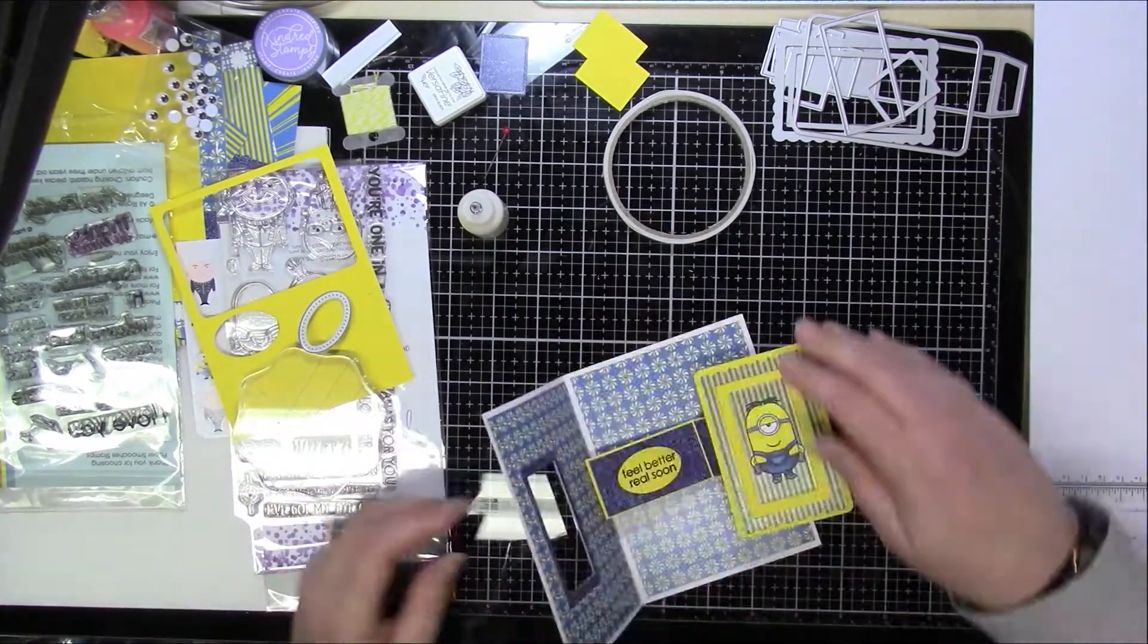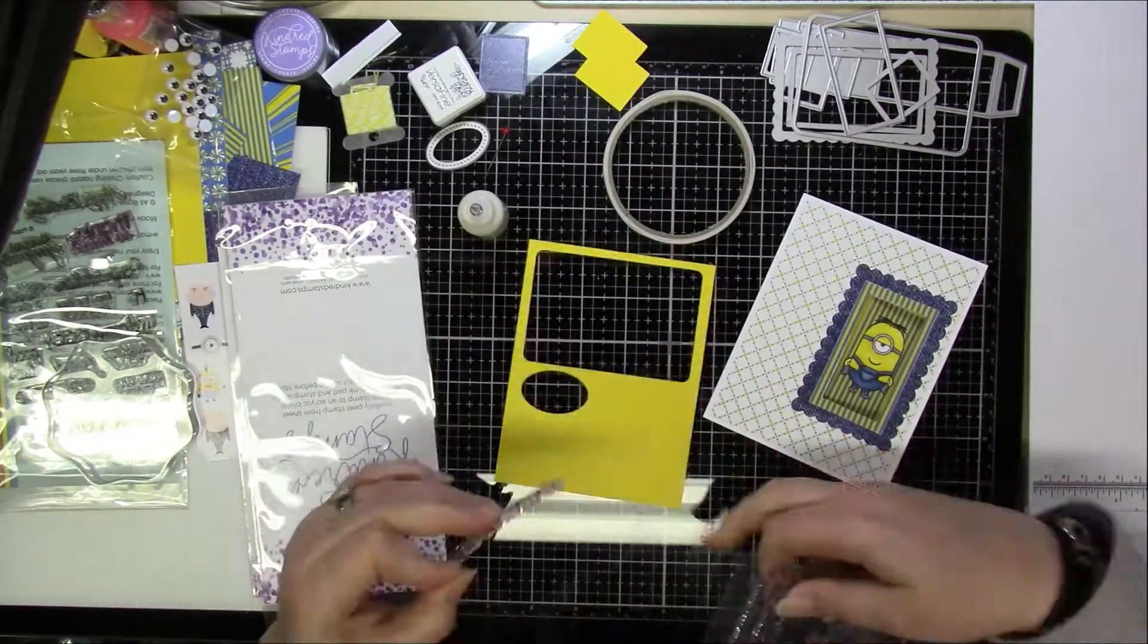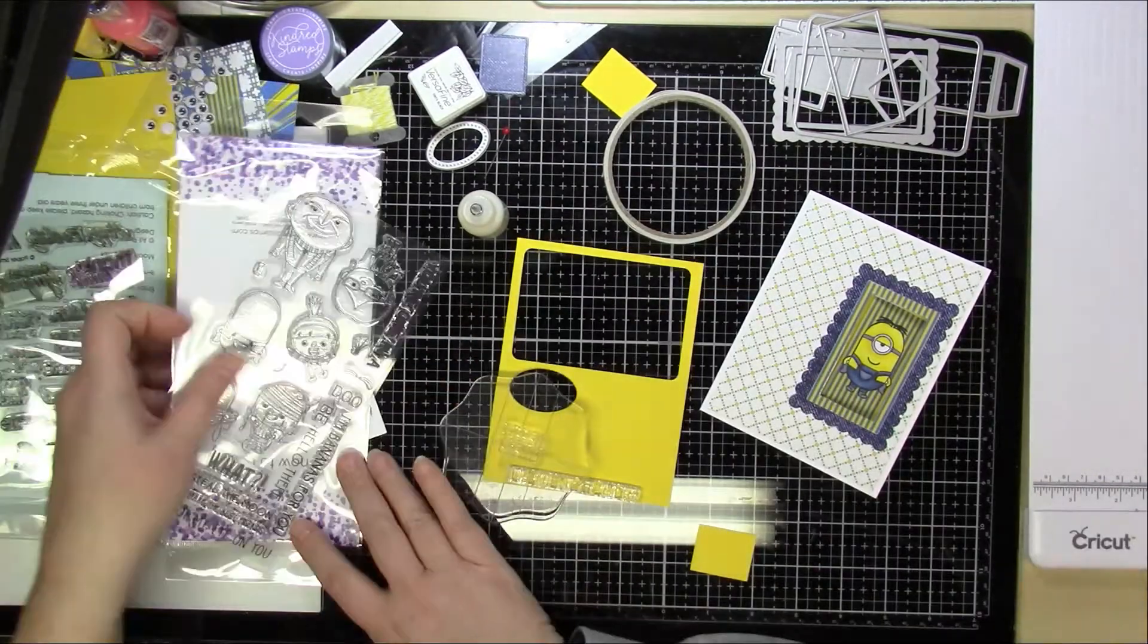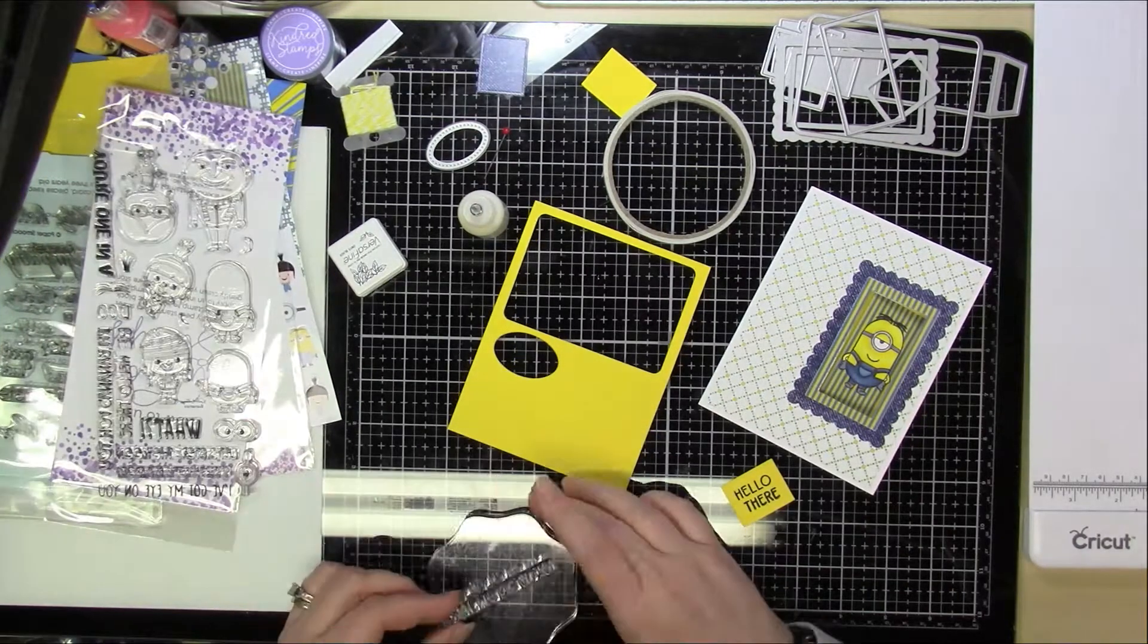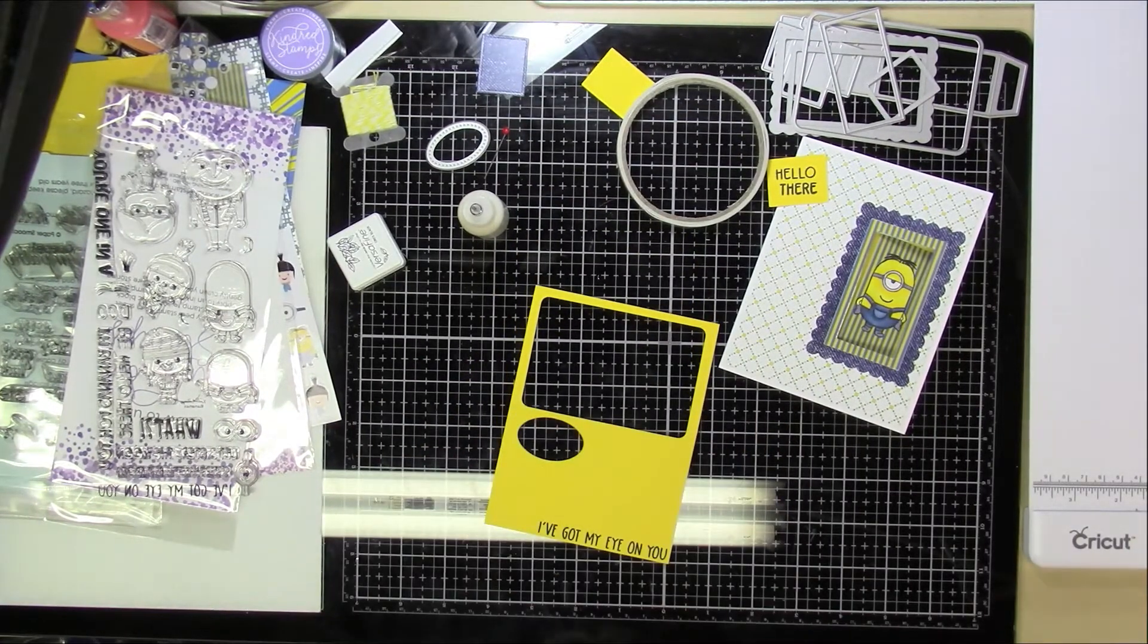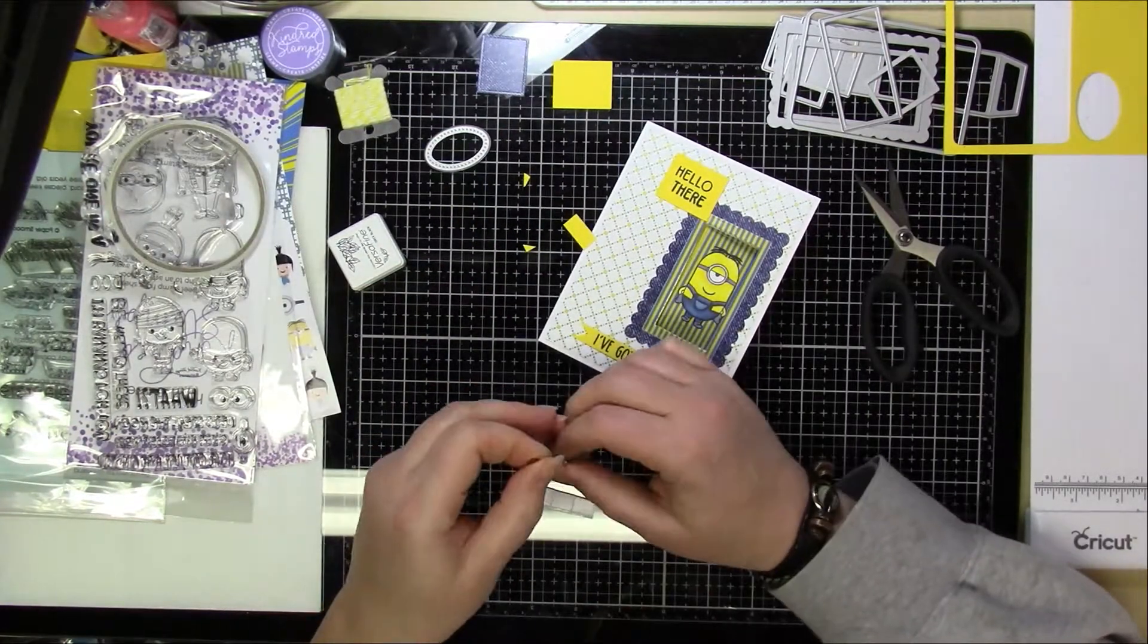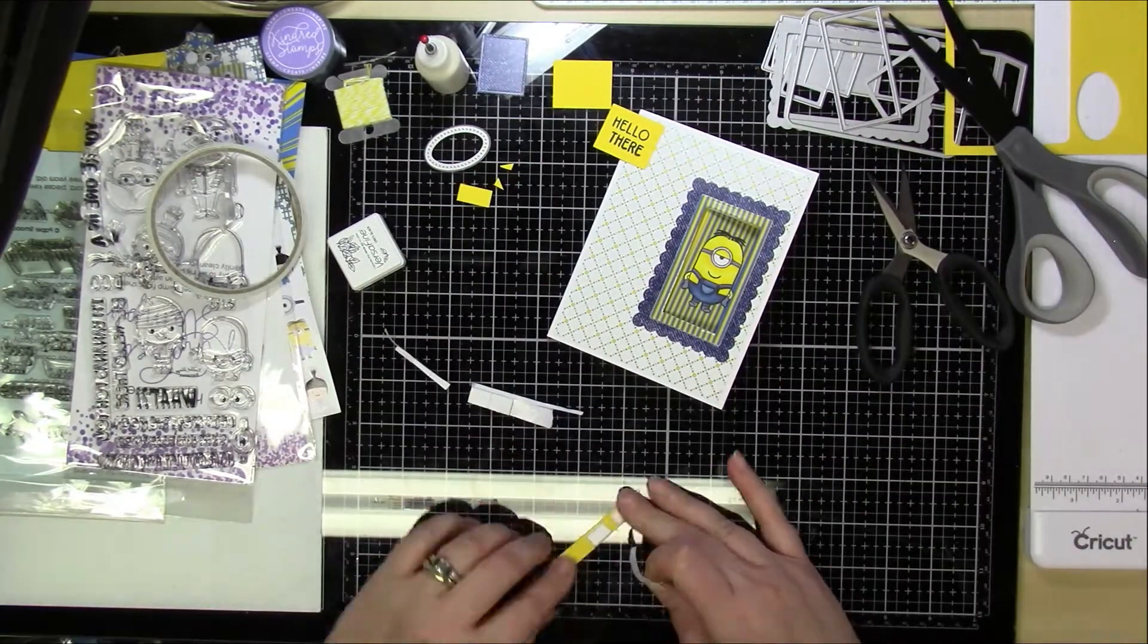And that is actually from a Paper Smooches stamp set that I got that from. This is going to a friend of mine who had dental work done and she's not really too happy or feeling too well. So I used one of the little squares that I had cut out and I cut the sentiment that says hello there so that I can make it not go across all the way across so that it lines up on top of each other.